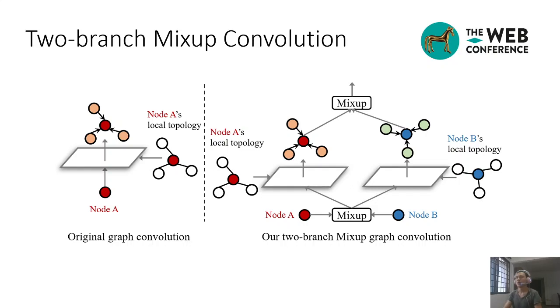We interpolate a pair of nodes as well as their ground truth labels to produce a novel and synthetic sample for training. To mix the graph topology, which is highly irregular, we propose the two-branch mixup graph convolution. In principle, a graph neural network layer updates node I's representations by aggregating the representations of itself and its neighbors. By stacking L layers, graph neural networks make the final layer prediction of node I based on its L-hop neighborhood, which is known as node I's receptive field.